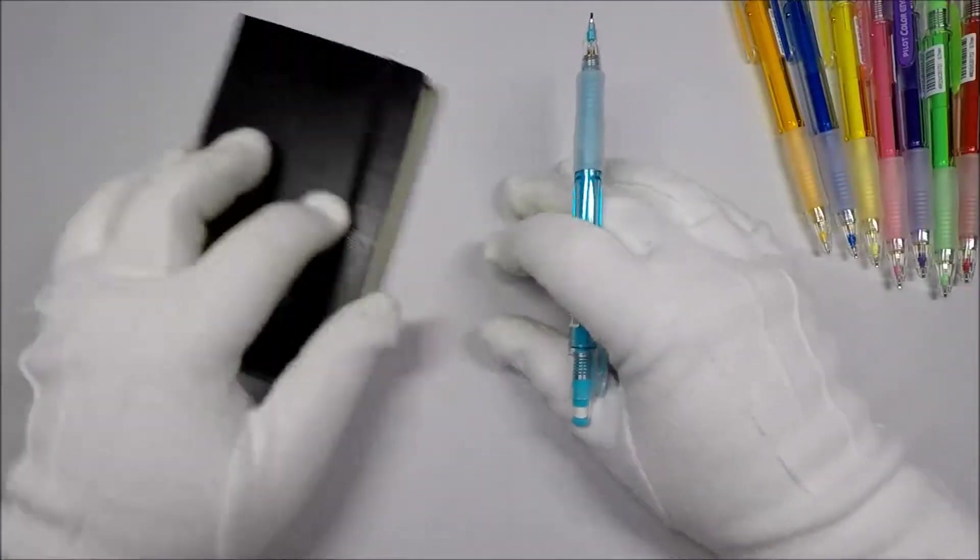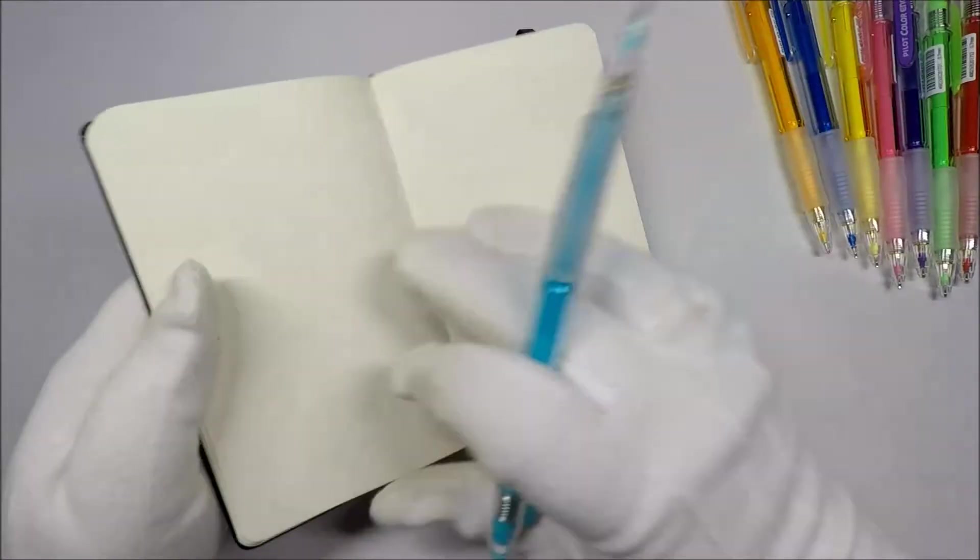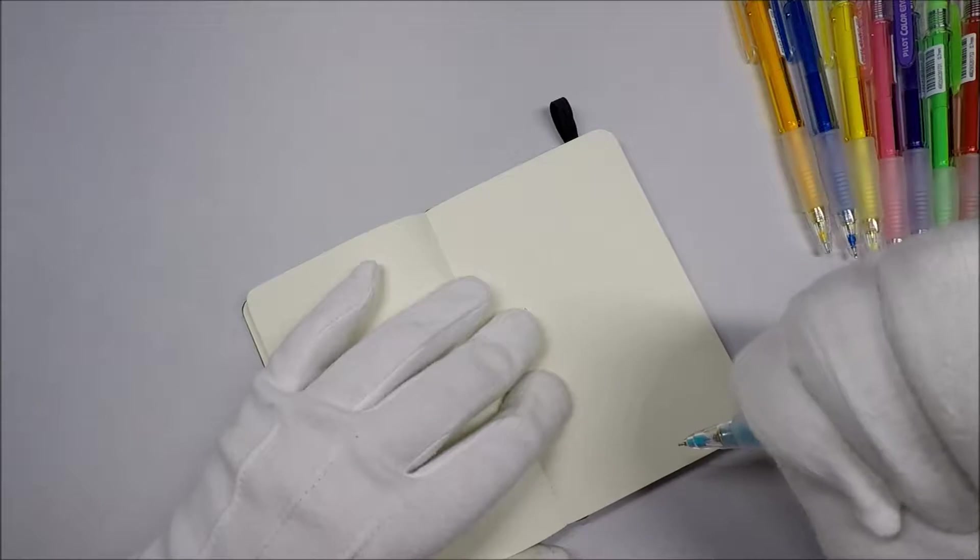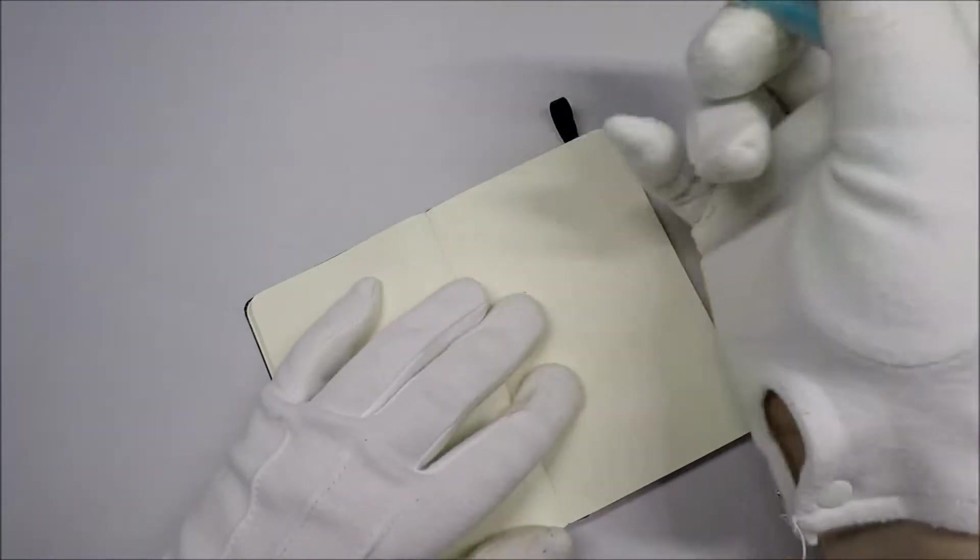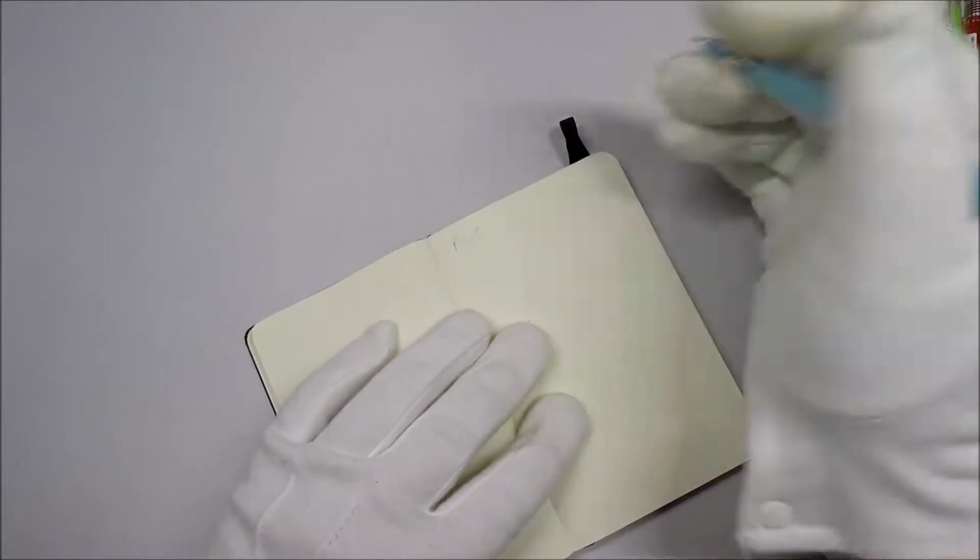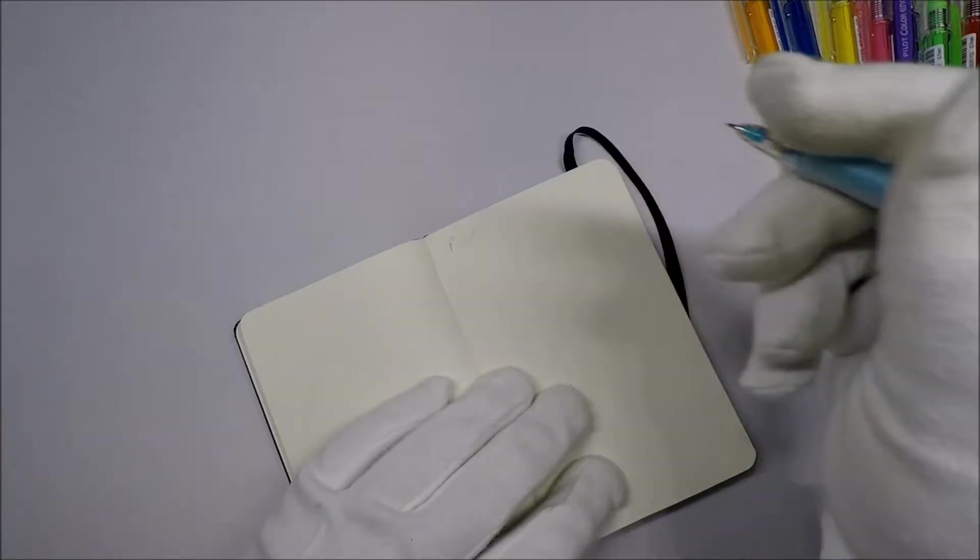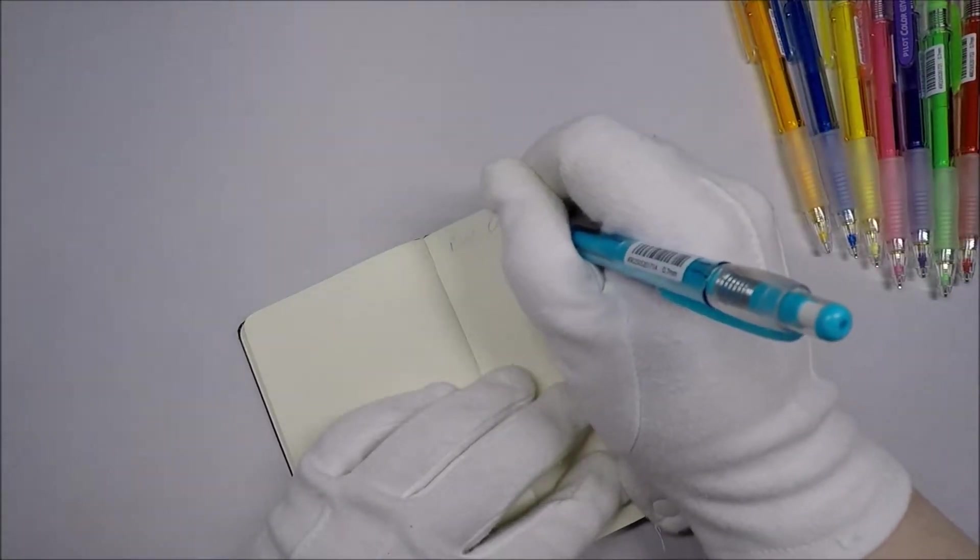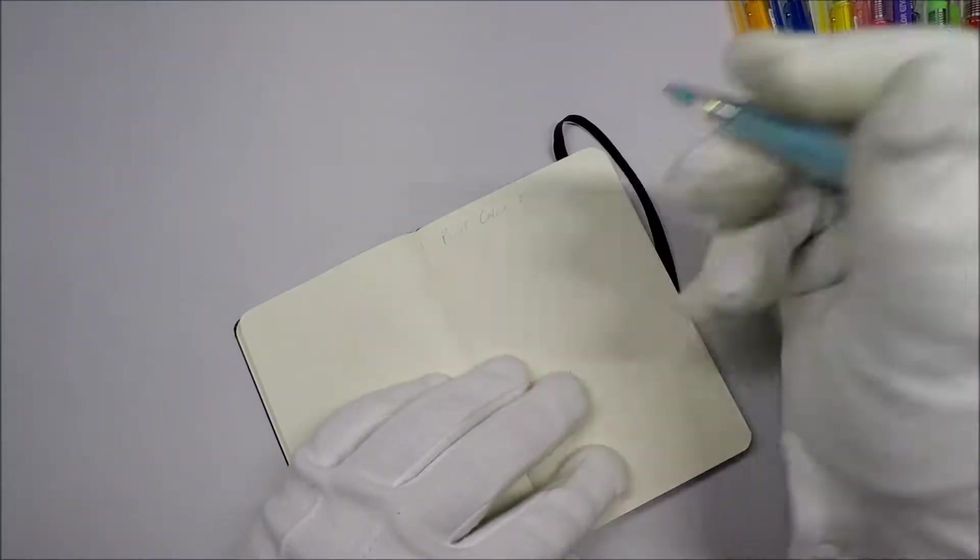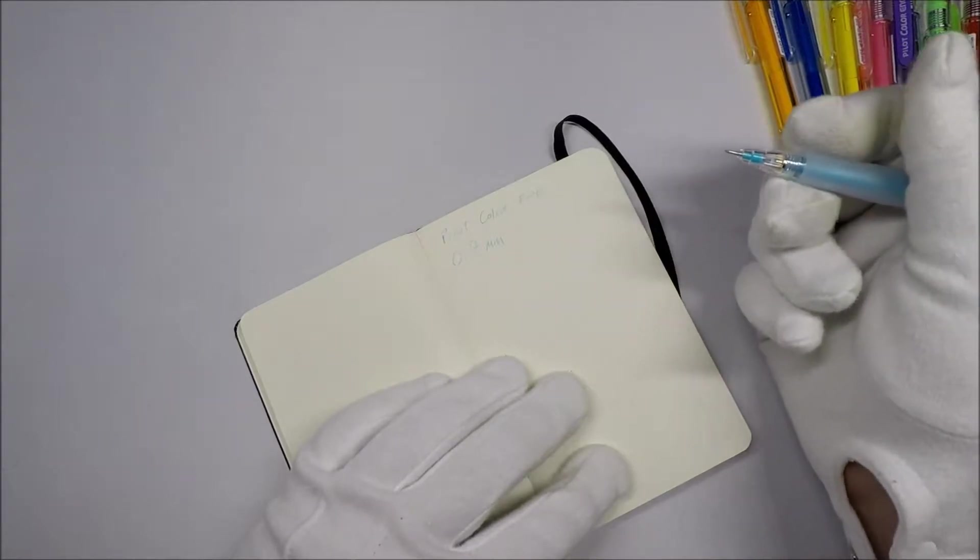Let's take a look at these, see what they look like, see how they write. Alright. So, this is the Pilot. Can y'all see that? That's okay. Pilot Color Eno. These are 0.7 millimeter pencils.